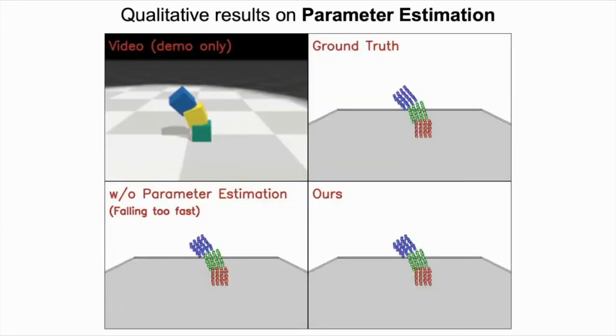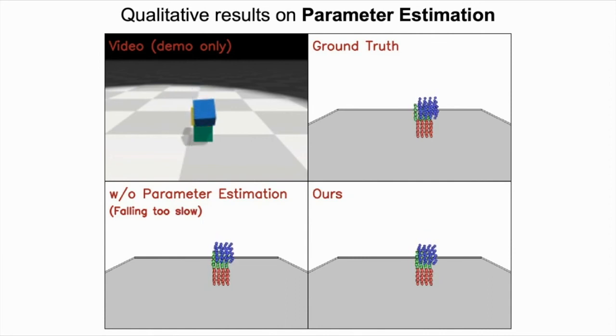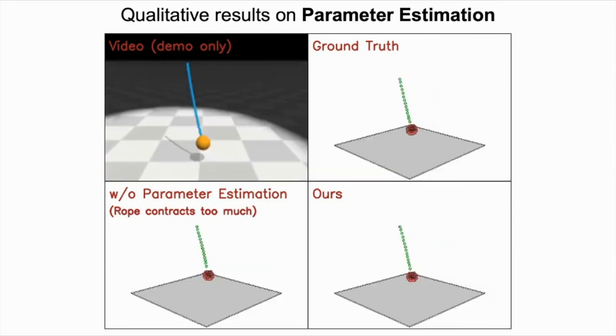Next, we show the results on parameter estimation. Again, the video shows the results on predicted particle positions into the future by comparing the ground truth with the results of our model, together with a version without parameter estimation. As can be seen from the video, if the model does not properly estimate the physical parameters, the cubes either fall too fast or too slow. The rope either contracts too much or too little.